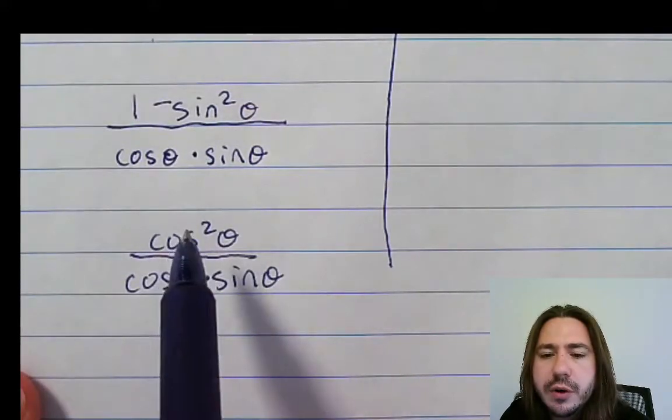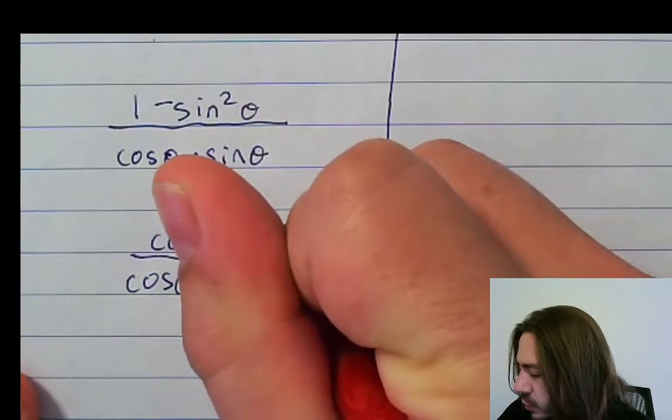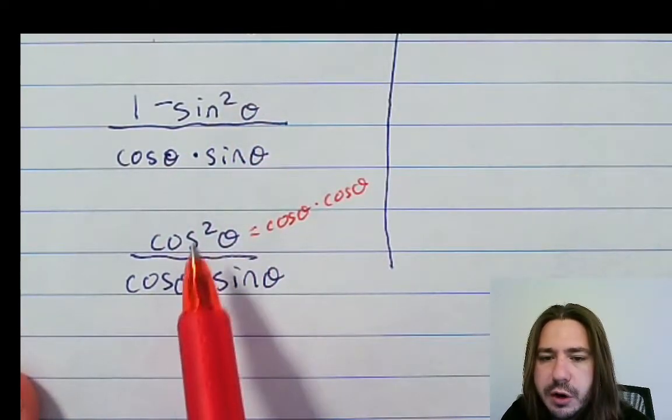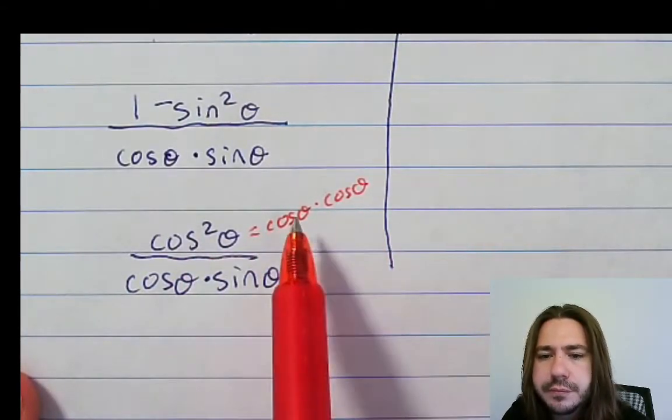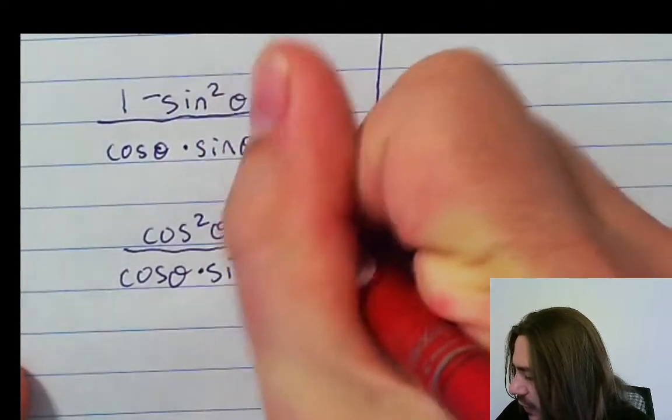Remember, if I have cosine squared theta, what this really means is cosine theta times cosine theta. Remember, any time you're squaring something, that means you've got that factor times itself. And so I'm only going to cancel out one of them, not the whole thing. So just be careful about that.